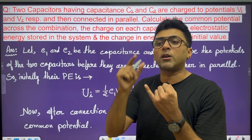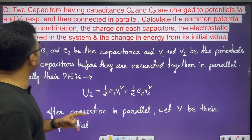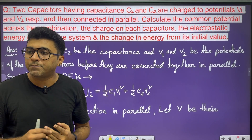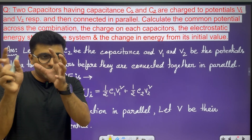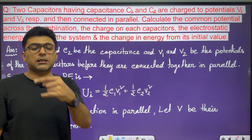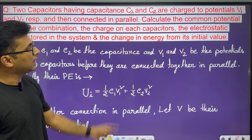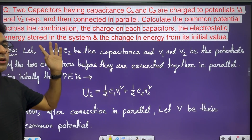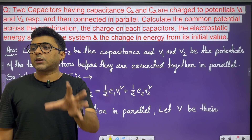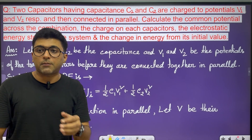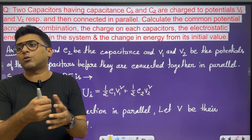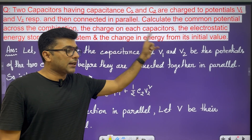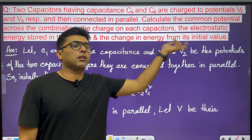Second, find the charge on each capacitor, Q1 and Q2 individually. Third, find the electrostatic potential energy stored in the system. And last, find the change in energy compared to the initial value.